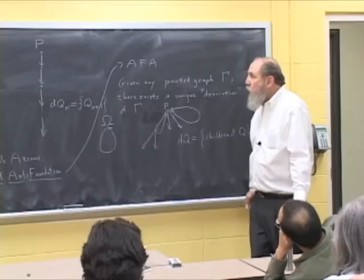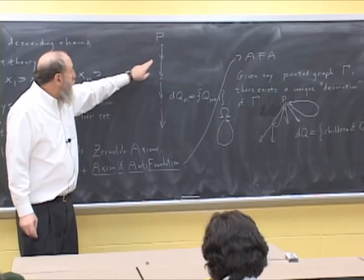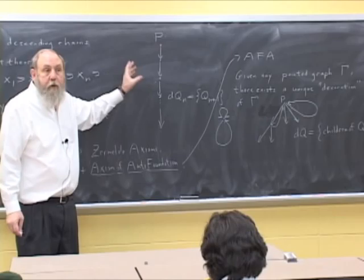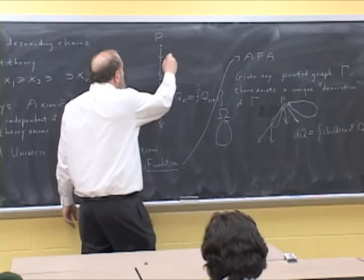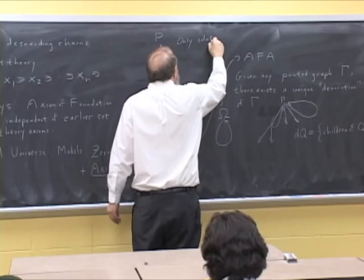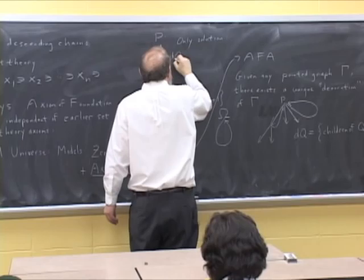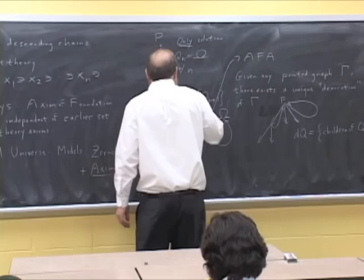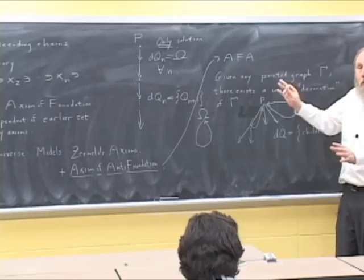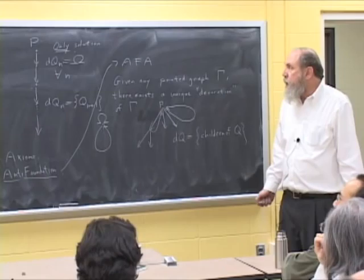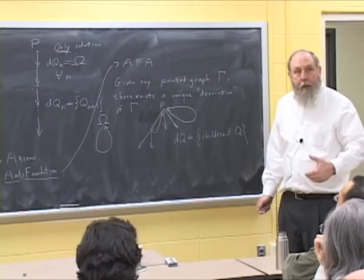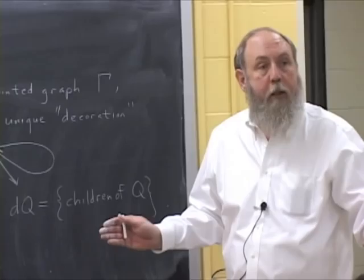If you think about it for a second, the only way that you can decorate this infinite descent is to assume that at each point you assign the quine atom, because the quine atom located at every single one of these nodes will satisfy this relationship at every node. So the only solution is to take d(qn) to be equal to omega for every n. In this case, there are two radically different pictures for discussion of the quine atom. In fact, you can show without much more work that any pointed graph that has no external legs must be decorated completely by the quine atom. So it's a simple exercise.